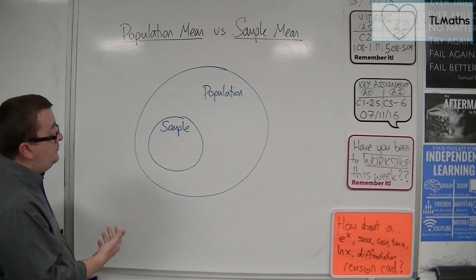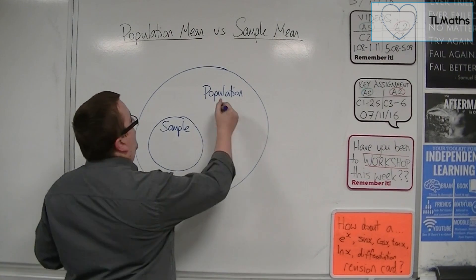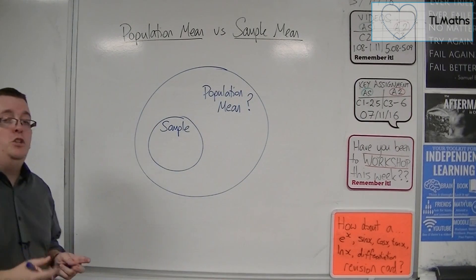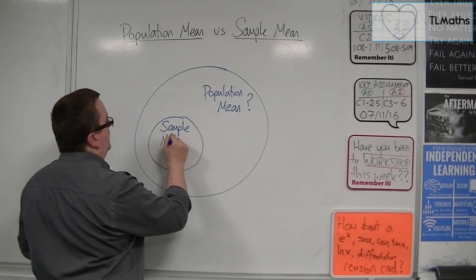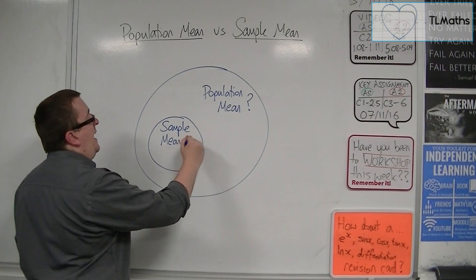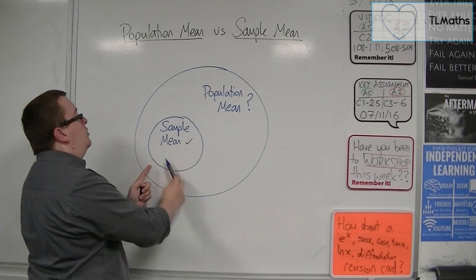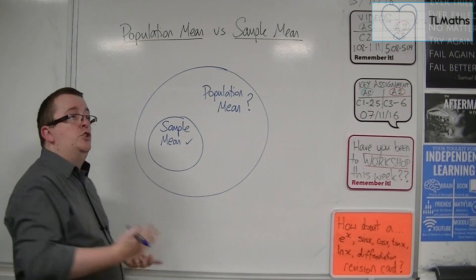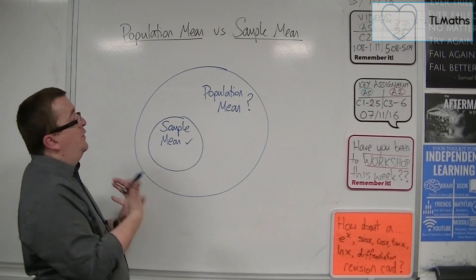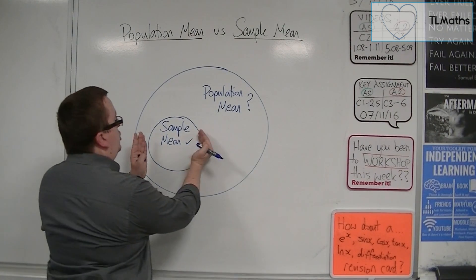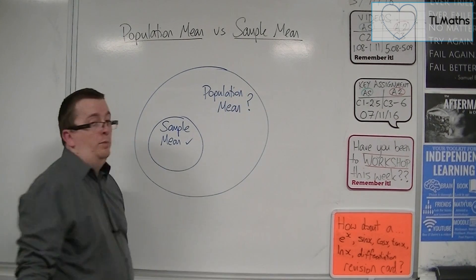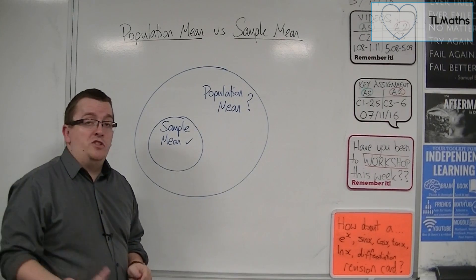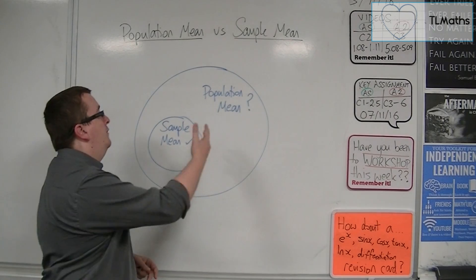What you'll find is that you'll have this population mean that, in the main, you probably don't know — that's something you are wanting to estimate. The sample itself will have a mean, and that is something we can find. How close this sample mean is to the population mean really depends on how large the sample is. The larger the sample, the closer it will be, because the larger your sample gets, the closer it'll get to covering the whole population. Ultimately, the mean that you get from your sample, as long as your sample is large enough, will be a good estimate for the overall population mean.